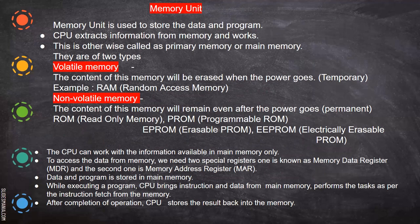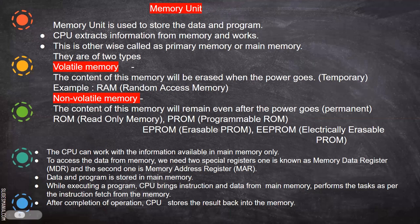To access data from memory, we need two special registers: the Memory Data Register (MDR) and the Memory Address Register (MAR). The address of the information you want to read is placed in the MAR, and then the data from that particular location is placed in the MDR. While executing a program, the CPU brings instructions and data from main memory, performs the task, and if a result needs to be stored back, it is written back to memory using the control unit.